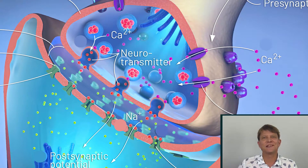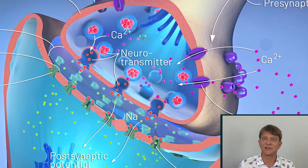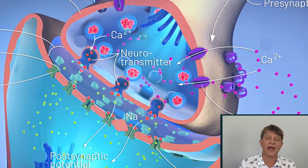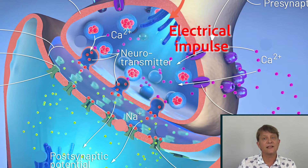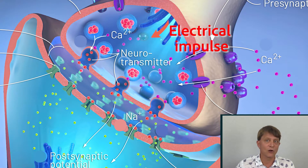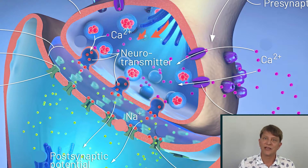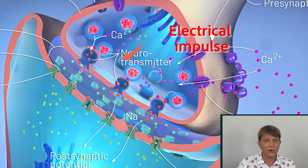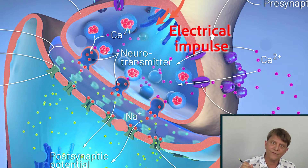We cannot simply change the strength of the message to the second neuron. The way we change the impact to the second neuron is by adjusting the frequency of the impulses — either very infrequently or very, very frequently.